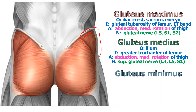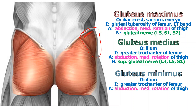Gluteus minimus is not shown here. If I wanted to show it, all I would need to do is pull off gluteus medius, and it's right underneath it — almost in the exact same spot, with the same origin, insertion, actions, and innervations. A mirror image right underneath it.